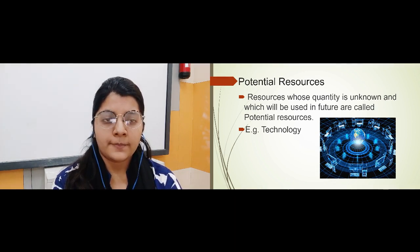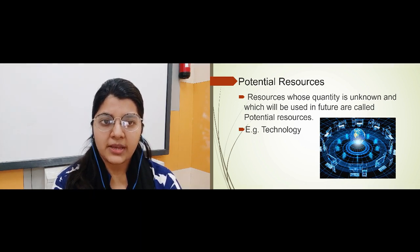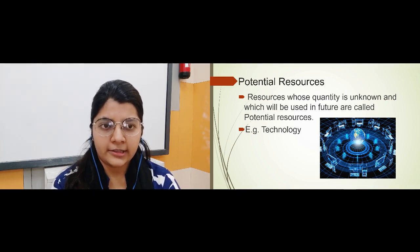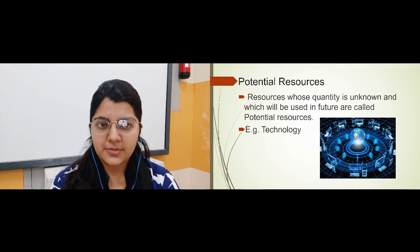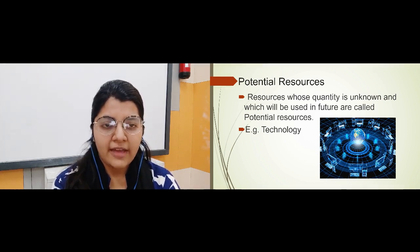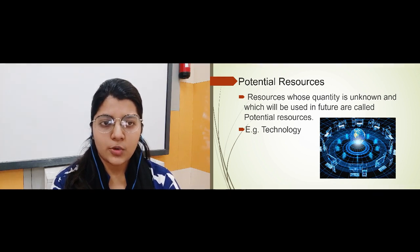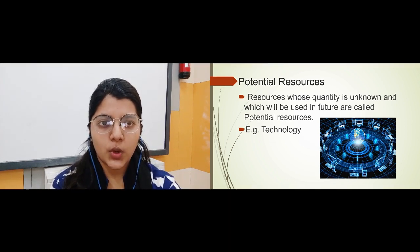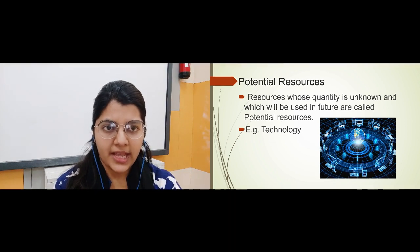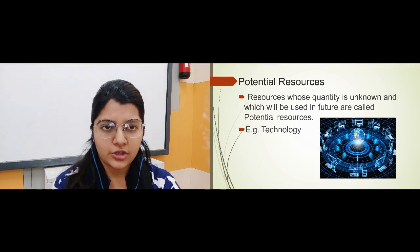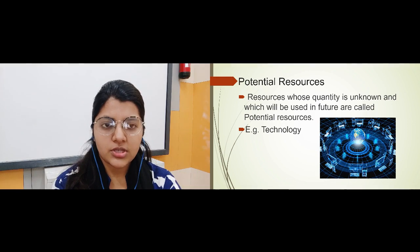For example, technology. Earlier we didn't know that all of us would be carrying smartphones so easily — we were having landlines. But now very few people have landlines; all of us have smartphones. This is an example of potential resources, where quantity is not known and those resources are going to be used in the future. So under use: actual resources have known quantity used at present; potential resources have unknown quantity and will be used in the future.